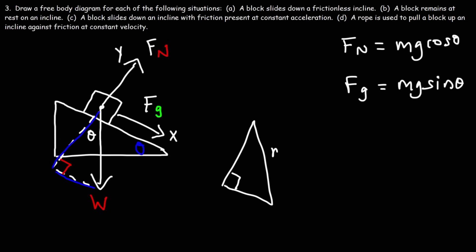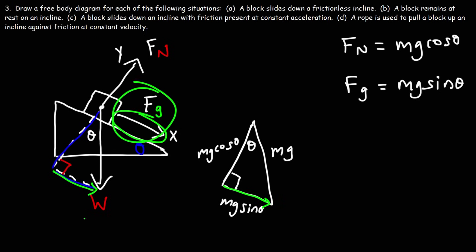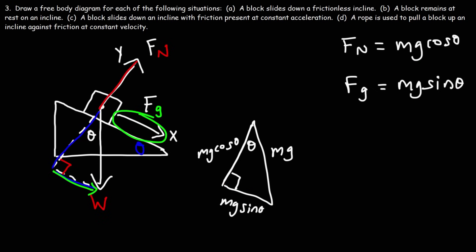Across theta, that side is mg sine theta. On the adjacent side, cosine is associated with the adjacent side, so that side is mg cosine theta. Notice that Fg equals this component of gravity because they are parallel — that's why Fg equals mg sine theta. The normal force balances this other portion, so that's why the normal force equals mg cosine theta.